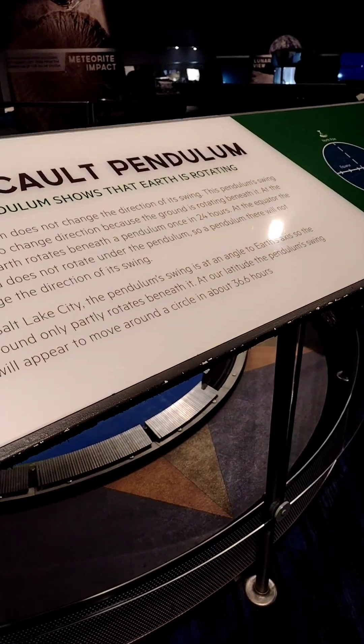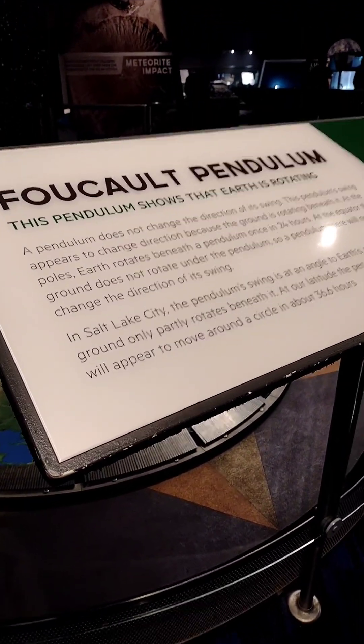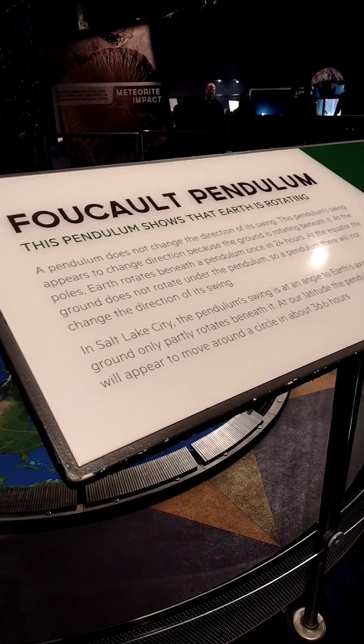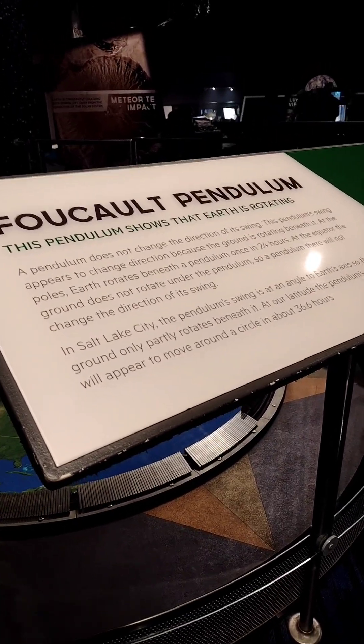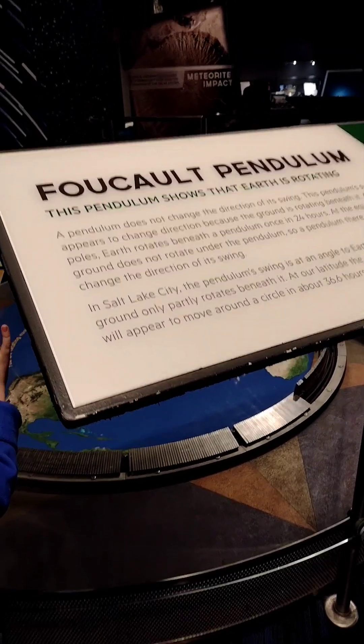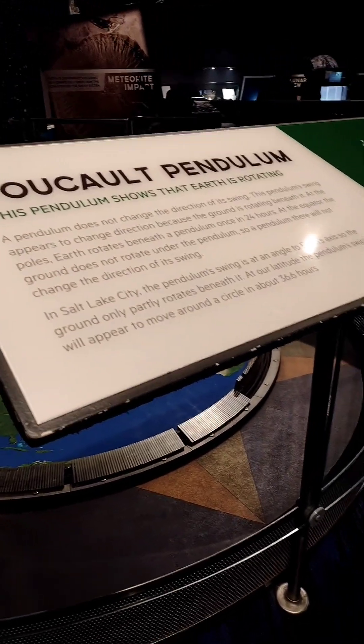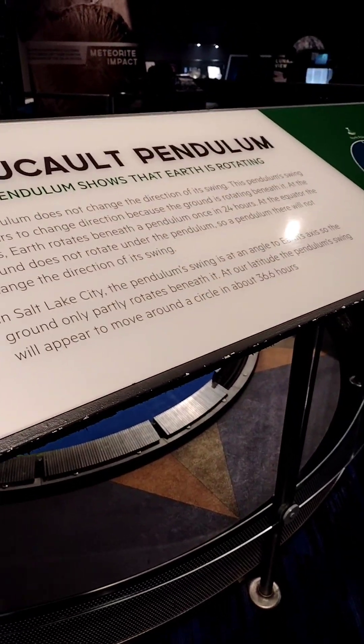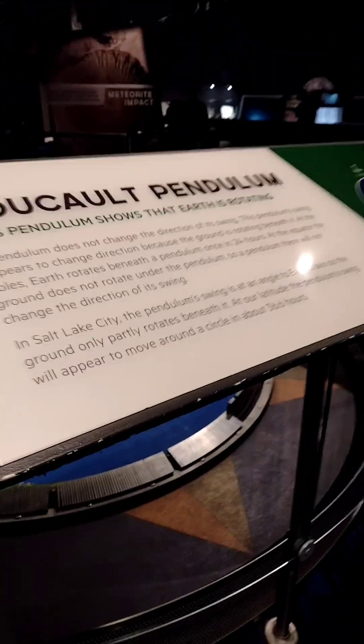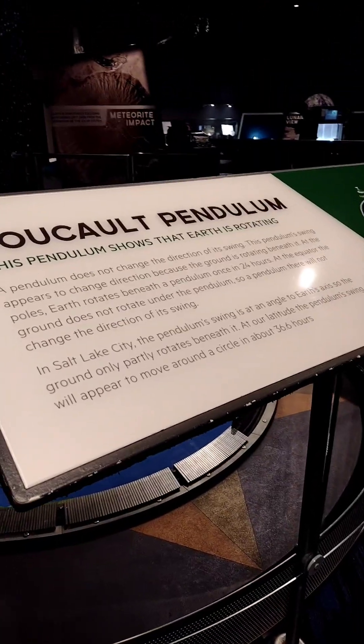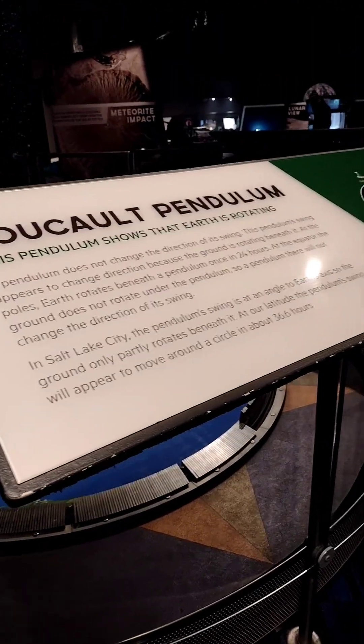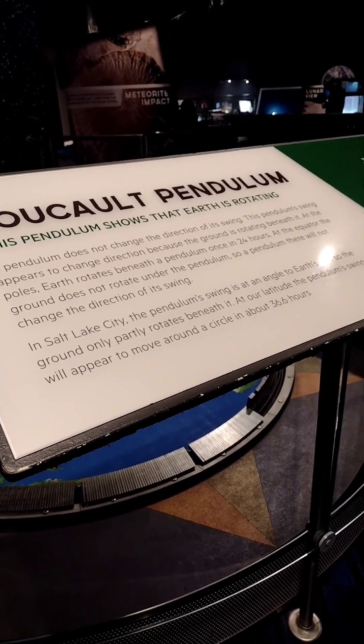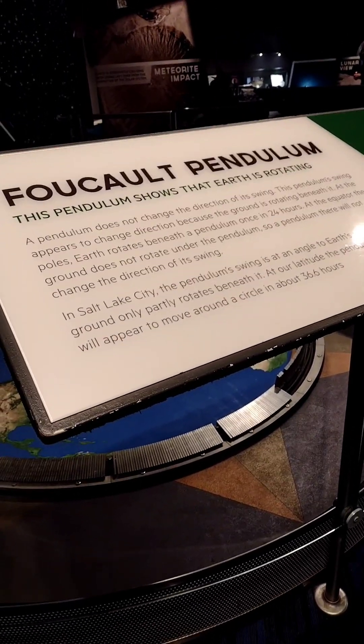This pendulum's swing appears to change direction because the ground is rotating beneath it. At the poles, Earth rotates beneath the pendulum once in 24 hours. At the equator, the ground does not rotate under the pendulum. It seems like it's barely moving. Right. But it's moving, the ground, not that. You are rotating toward the east at 700 feet per second.